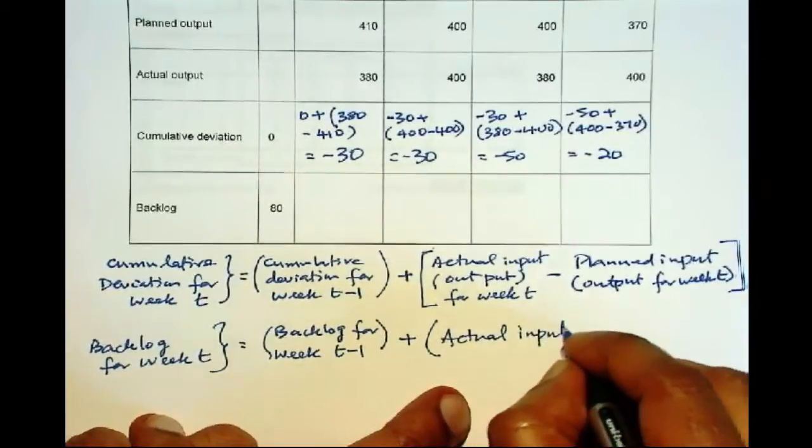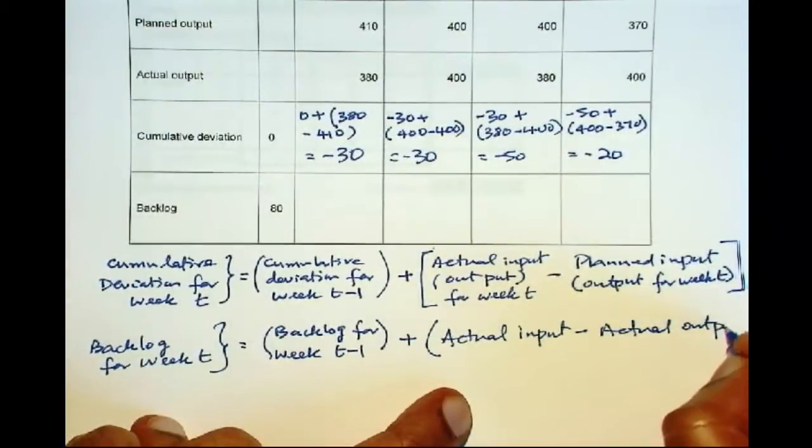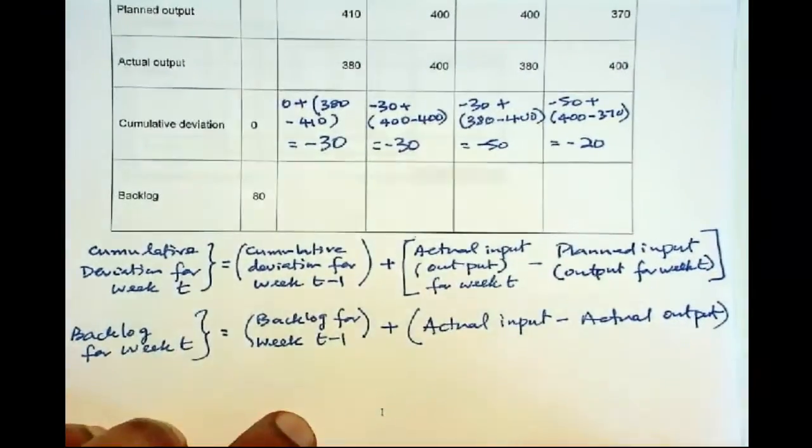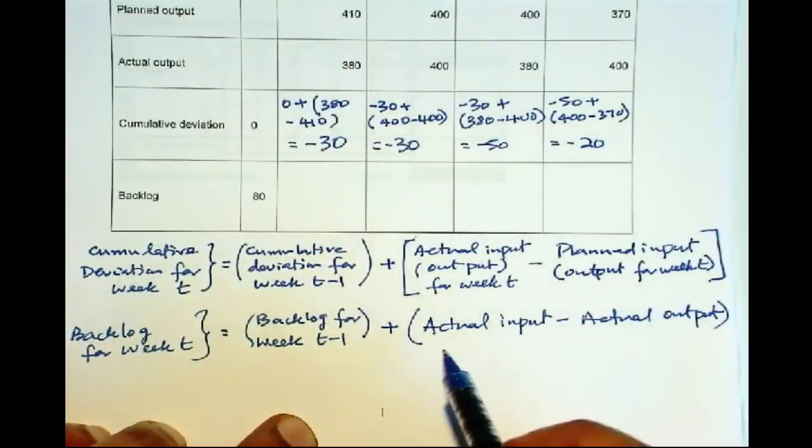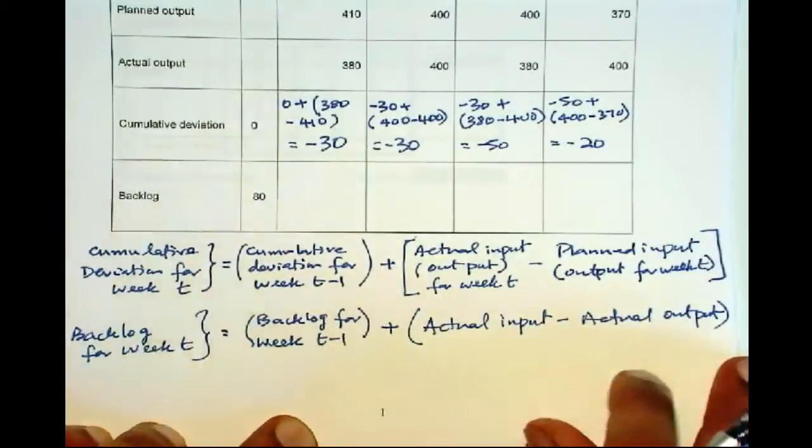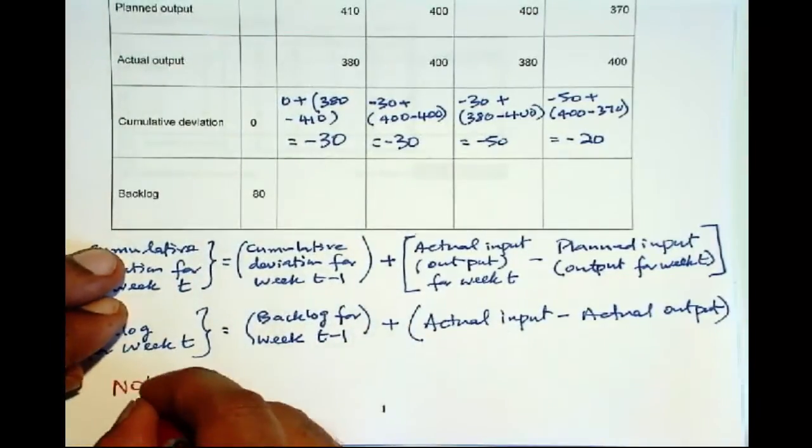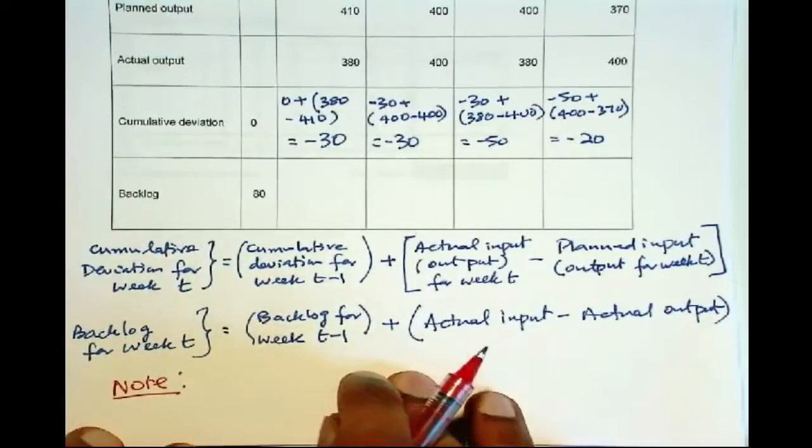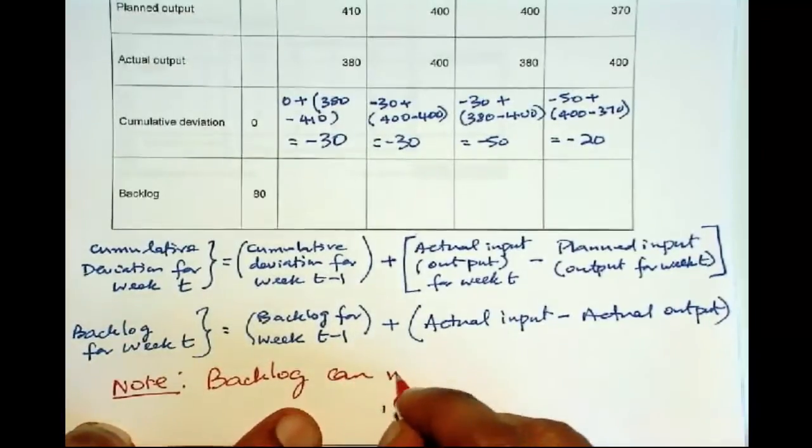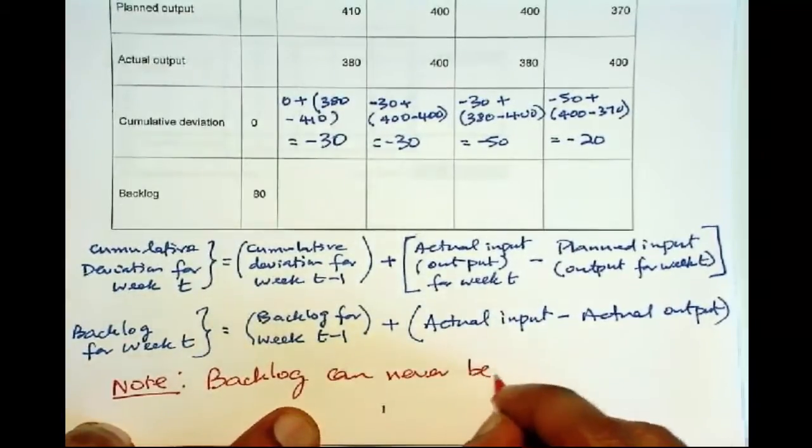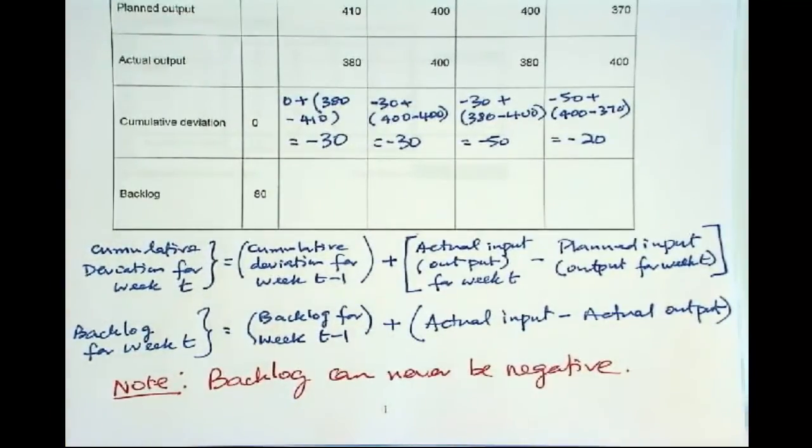So backlog is about what is actually happening. It is not about planned input or planned output, it's always with actuals. So because of that, you need to note, backlog can never be negative. So if you end up with a negative backlog, then you know that you made some mistakes somewhere.